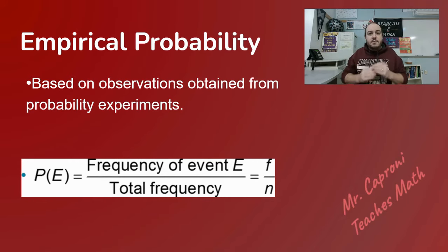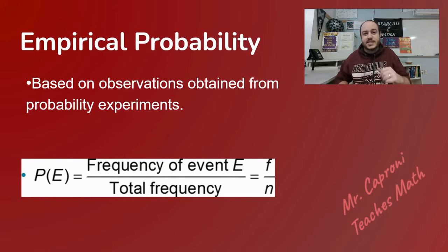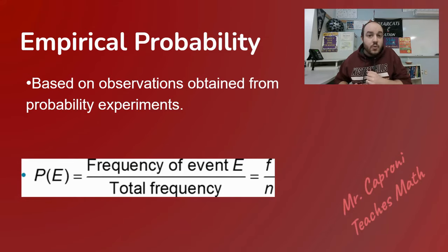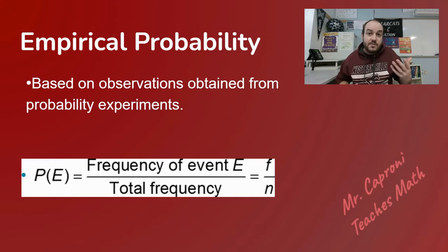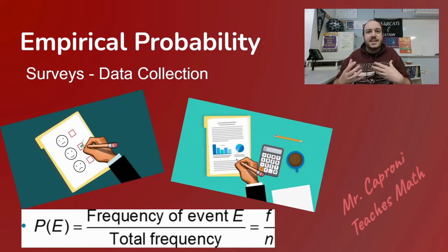The second type is empirical probability, and here's the difference between empirical and classical: empirical is based upon data that has been collected. Instead of saying in theory that one out of six times you should roll a four, you actually roll the die a thousand times. If 300 of those rolls come up as four, then the probability of rolling a four is 300 out of 1000. We typically use empirical probability for surveys or data collection.